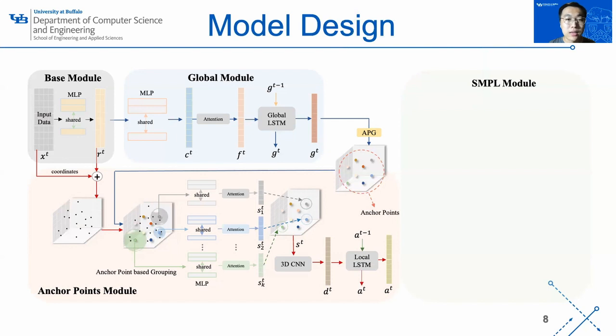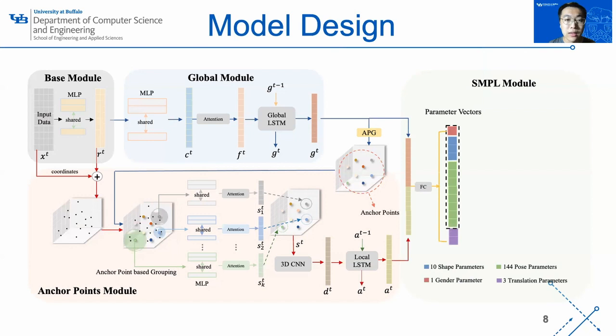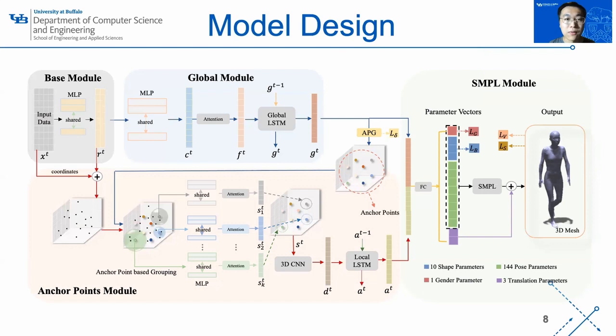The last module is the SMPL module. We concatenate GT and AT and fit it into a fully connected neural network to generate all the parameters to build a 3D mesh. Then, by fitting these parameters in the SMPL model, we can build a realistic 3D human mesh. Lastly, there are many loss functions to guide the accuracy of template displacements, subject shapes, subject genders, skeletal joints locations, and mesh vertices locations.